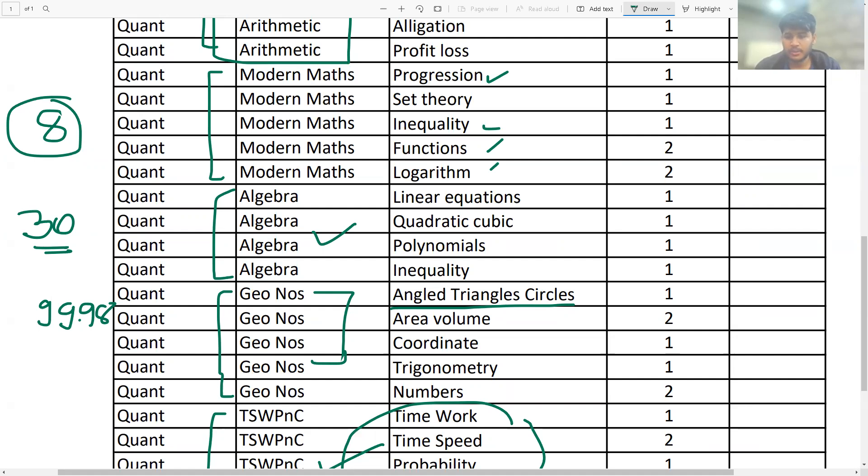Interview has the most weightage in the selection process for almost all the institutes. So even if you have a great CAT score, great CAT percentile, it won't matter if you don't do well in the interview. So I believe interview should be the focus once you get the call and you shouldn't leave behind your CAT percentile. Obviously you can carry the confidence that you have. You should actually, because you have worked that much to get that percentile, but you shouldn't let your interview preparation be affected by that.